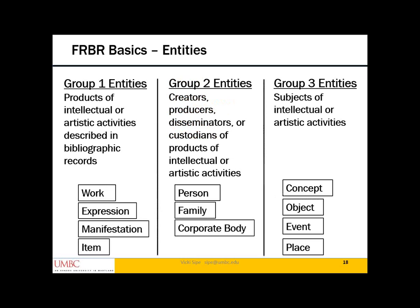The entities are divided into three groups. Group One entities — the things described in bibliographic records — are four: Work, Expression, Manifestation, and Item. Group Two entities are the creators of the things, and there are three: Person, Family, and Corporate Body. Group Three entities are the things about things, of four types: Concept, Object, Event, and Place.